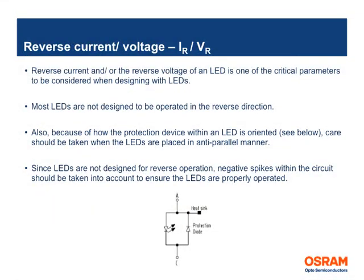One of the other key parameters is the reverse voltage or current of LEDs. Not only will LEDs not emit light when operated in reverse direction, operating in reverse direction will cause the LED to fail if the maximum reverse voltage or current exceeds the limit.